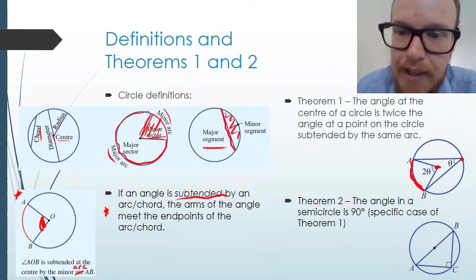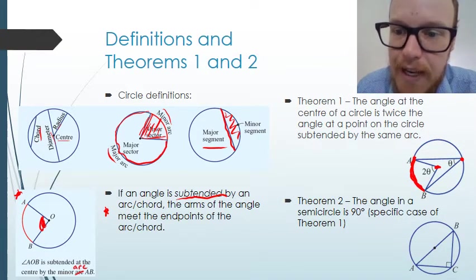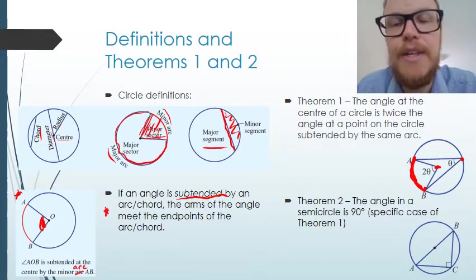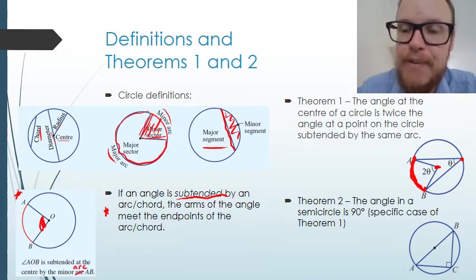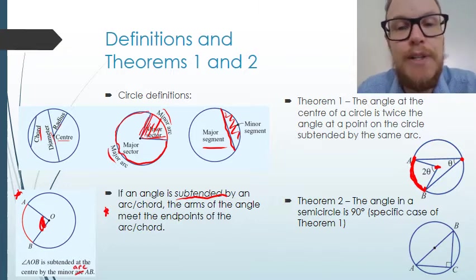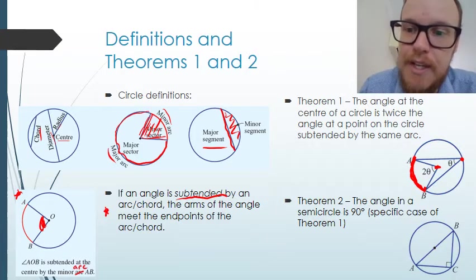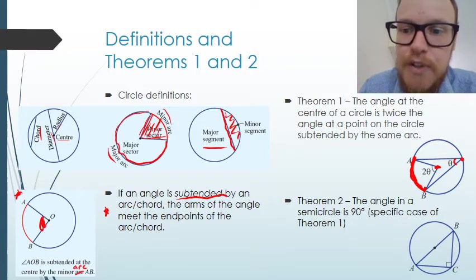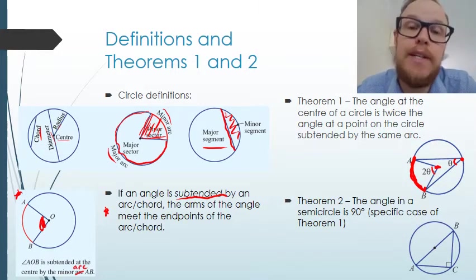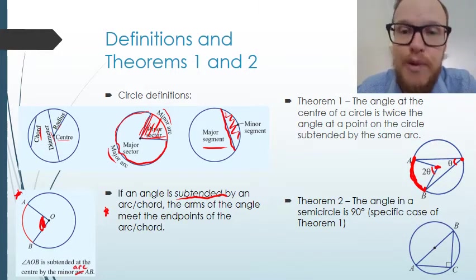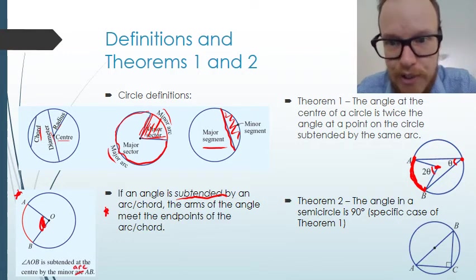We can see that both of the arms of those two angles meet arc AB. There is a relationship between those two angles: the one at the edge of the circle is half that of the one at the centre of the circle, or the one at the centre is twice that of the one at the edge.